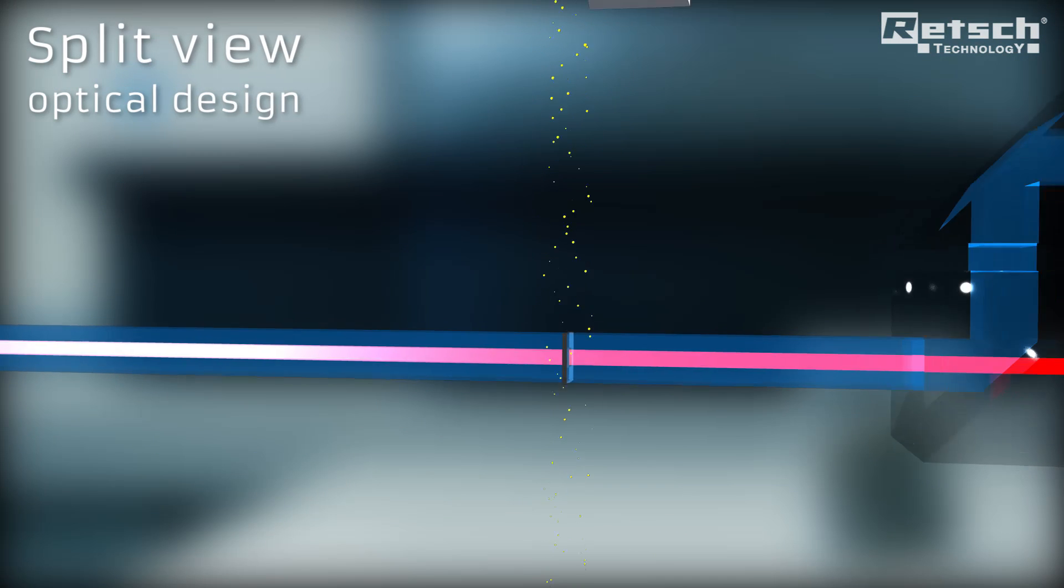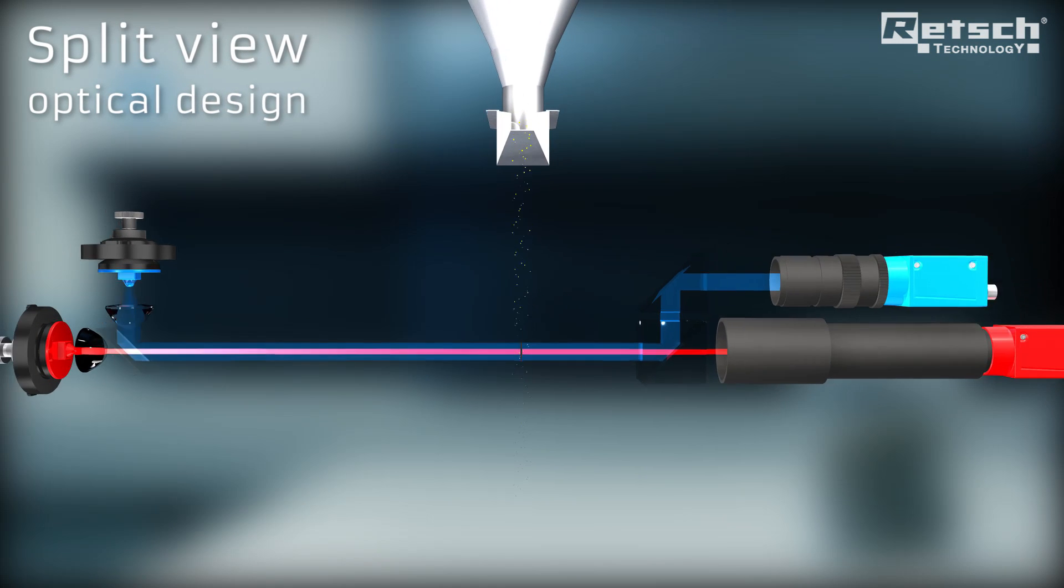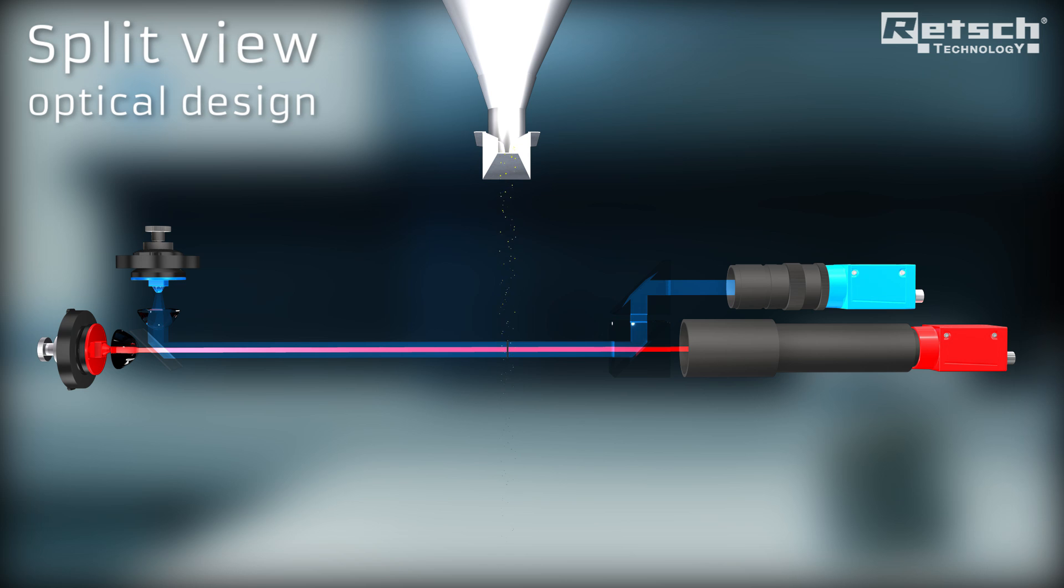The CamSizer X2 features a new, innovative split-view optical design in which both cameras share the same focal plane.